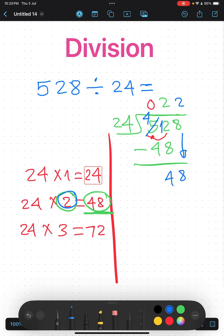48 divided by 24. Write it up and minus 48 down. The remainder is zero and the quotient is 22.